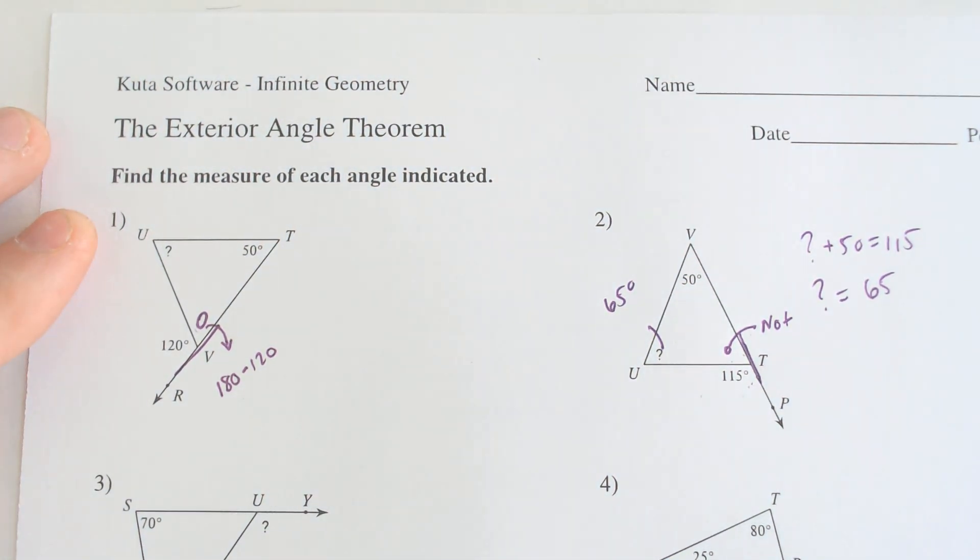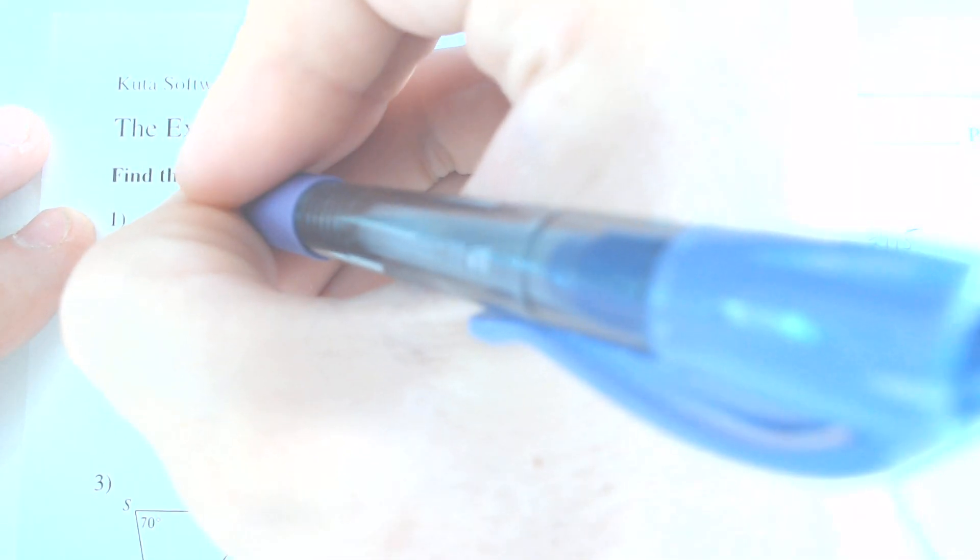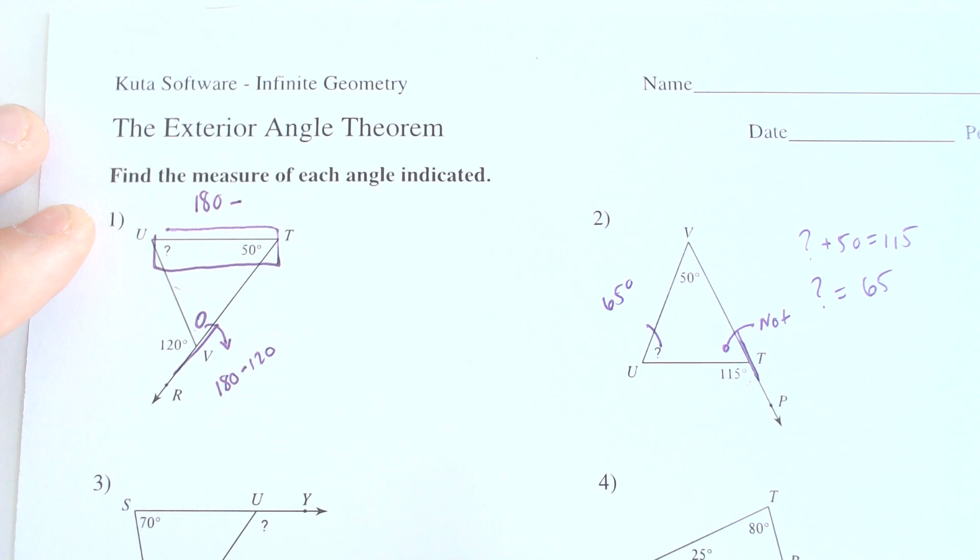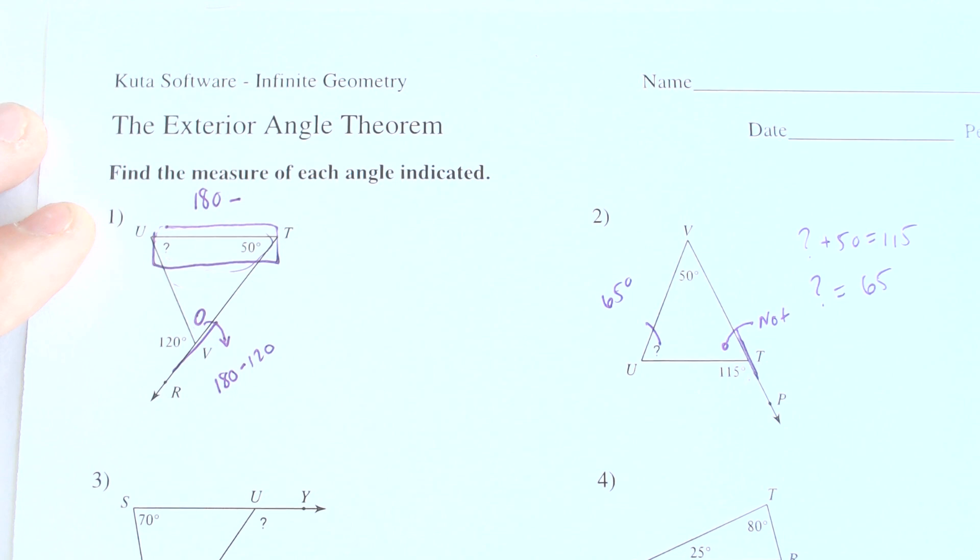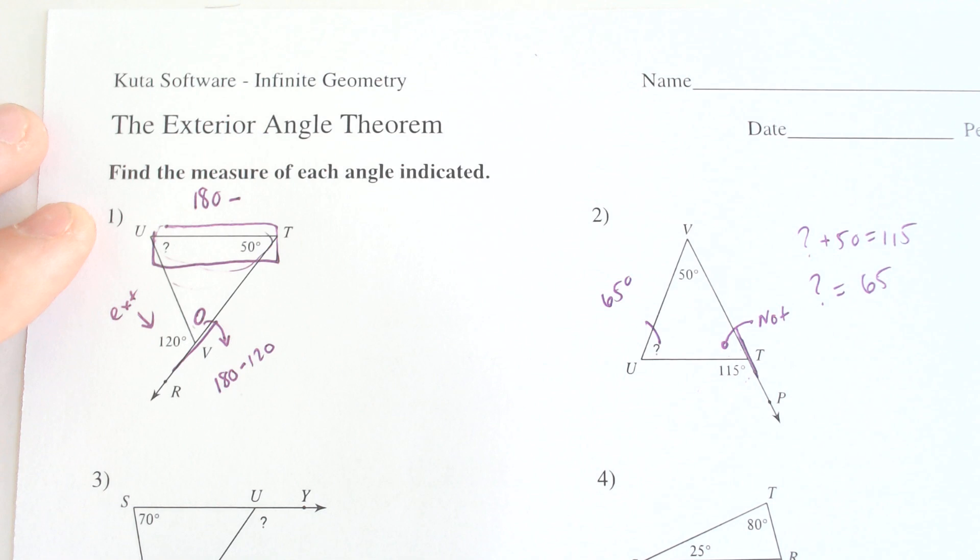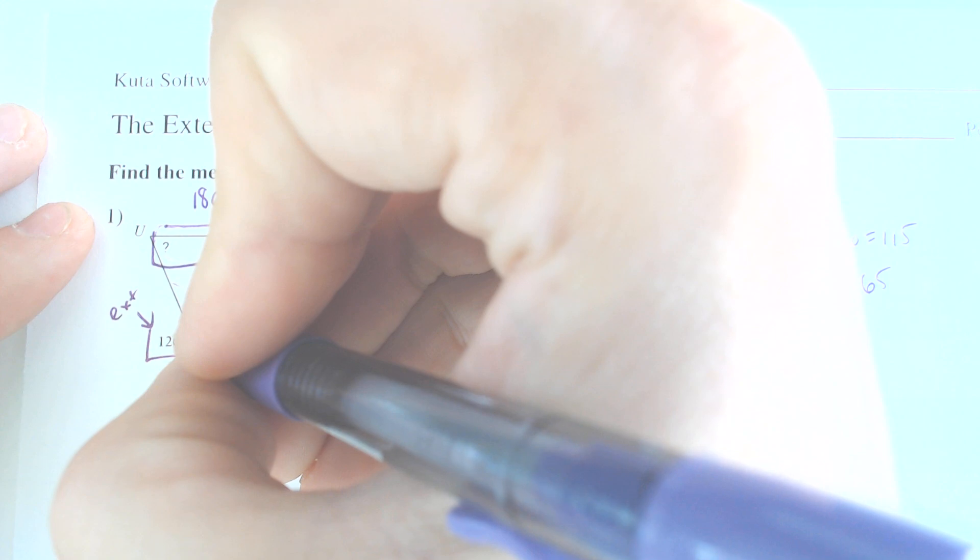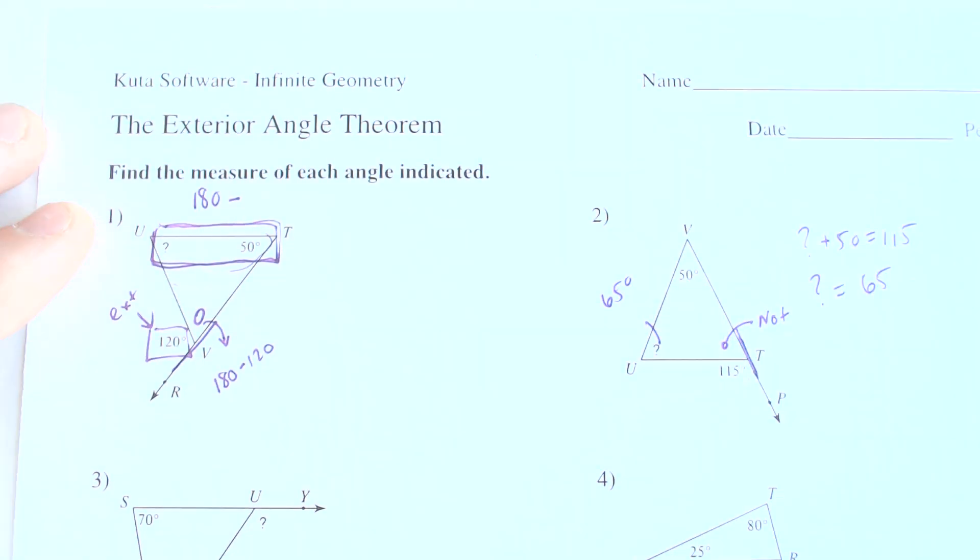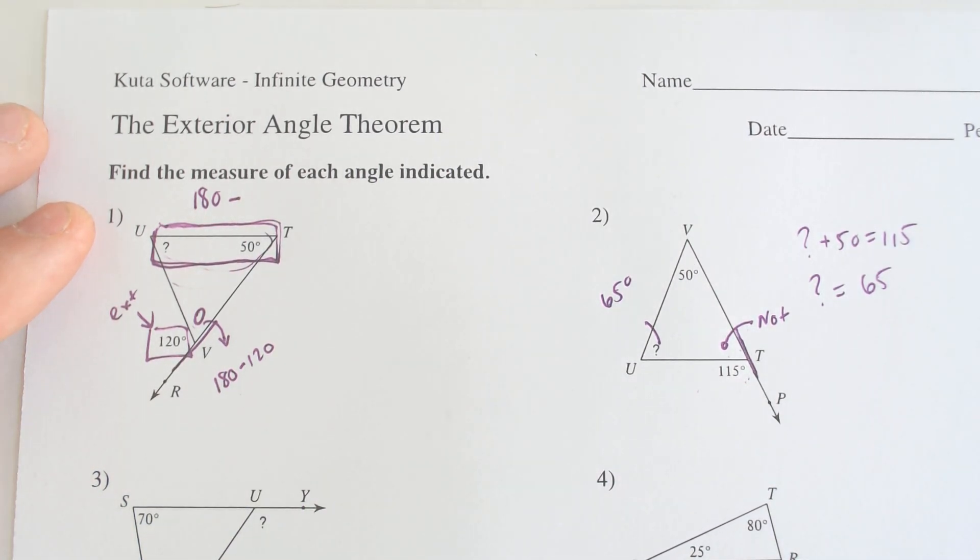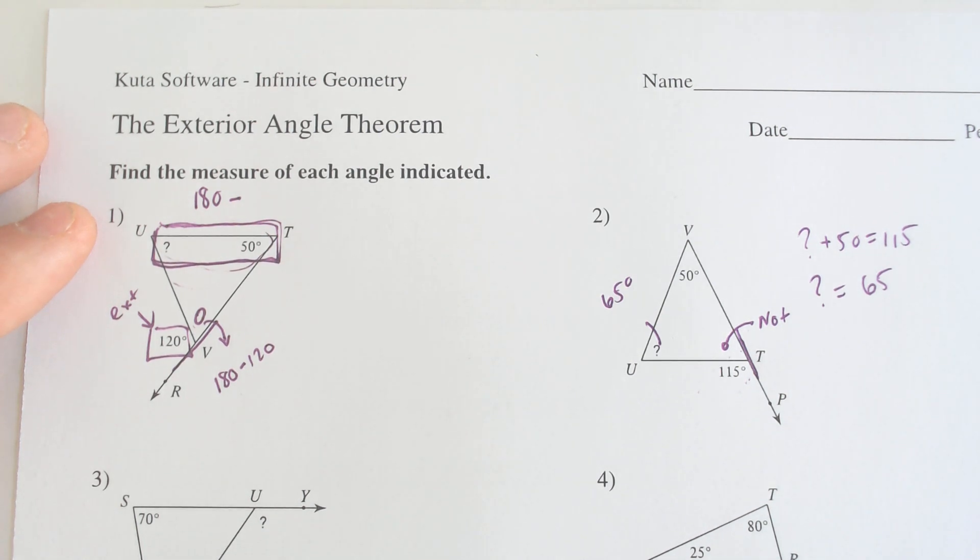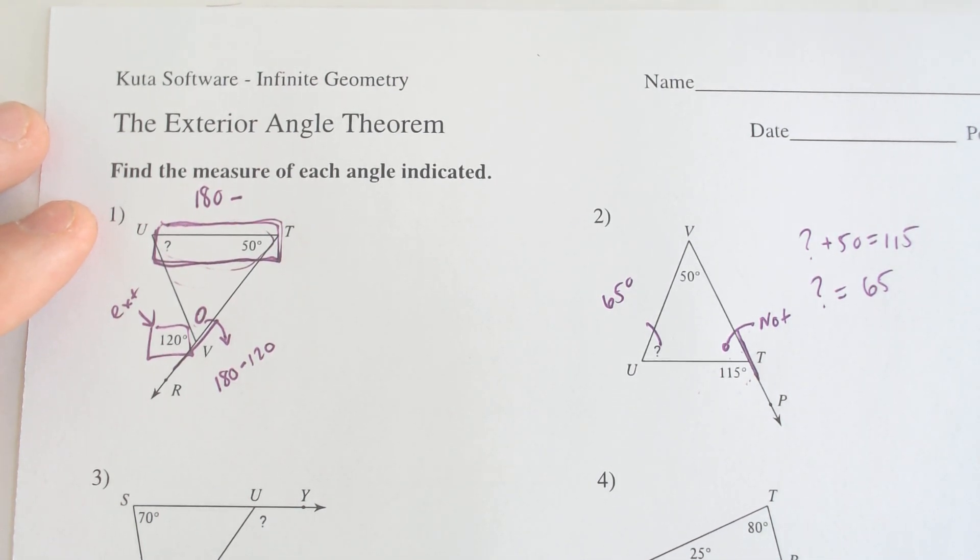Now if I wanted to find this circular angle out a different way, I would have to take both of these two angles and it'd be 180 minus both of those. Well notice how we have 180 minus both of these angles added together and we have 180 minus the singular exterior angle. Because of that, that must mean that this 120 must equal these right here via the transitive property.